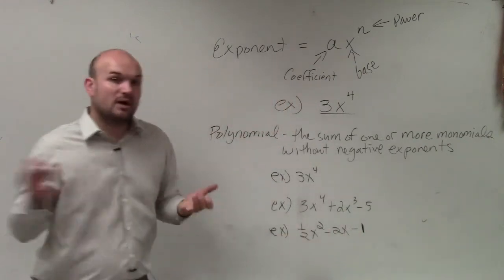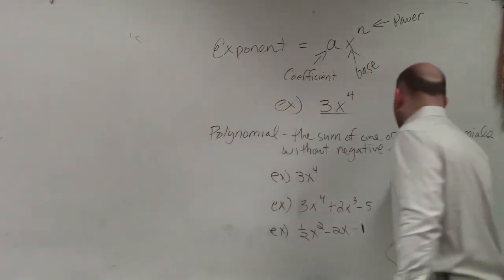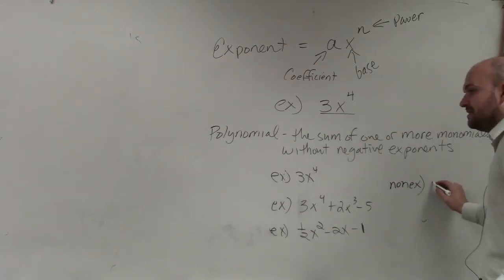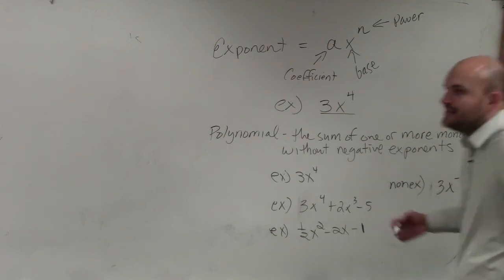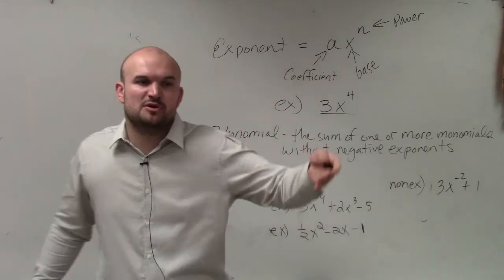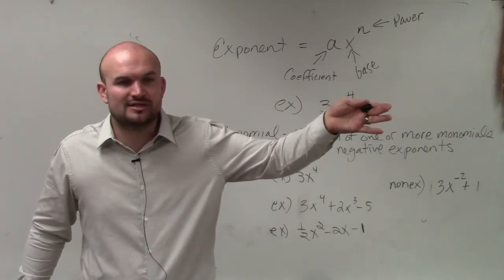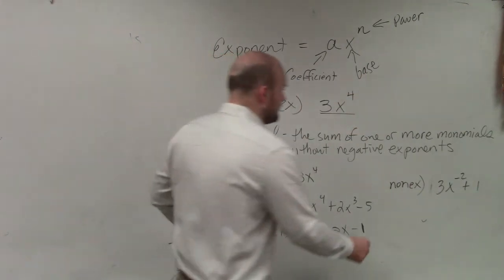The one important thing, though, ladies and gentlemen, that we cannot have - an example of a polynomial cannot be 3x to the negative second plus 1. You can't have negative exponents, because negative exponents put the exponent where? In the numerator or the denominator to make it positive? Denominator.